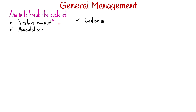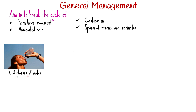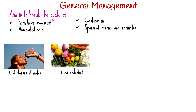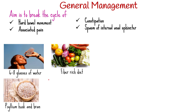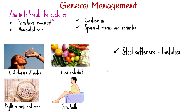The management of anal fissure is usually aimed at breaking the cycle of hard bowel movement, associated pain, and worsening constipation and spasm of the internal anal sphincter. General management involves adequate fluid intake of about 6–8 glasses of water, eating a fiber-rich diet like vegetables and fruits, bulk-forming agents like psyllium husk and bran, and taking sitz baths. A sitz bath is a warm water bath you sit in to relieve discomfort in your perineal region; it can help soothe pain, itching, and other symptoms in the anal and genital areas. Stool softeners like lactulose are also used.